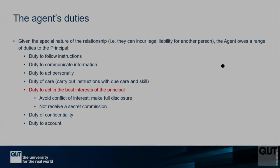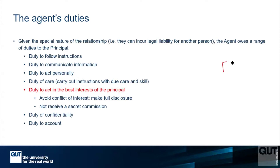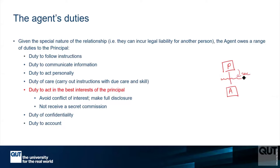The basic agency relationship requires the principal to delegate their authority to an agent to act on their behalf. What that means is that often the principal can't see what the agent is doing — not all the time. It's like if you have a boss at work; they can't see what you're doing every minute of the day in most jobs.